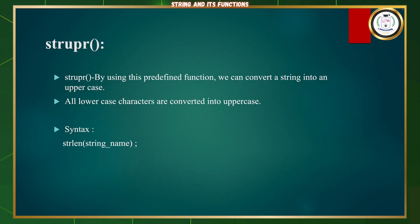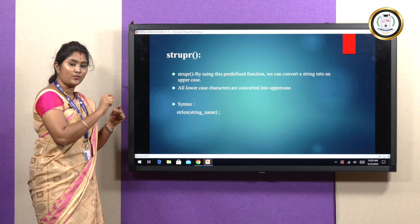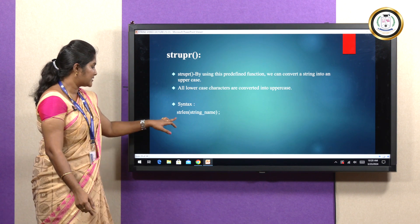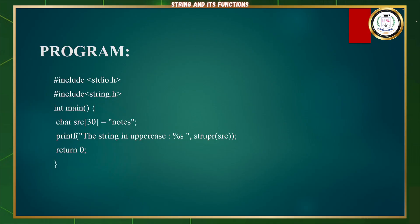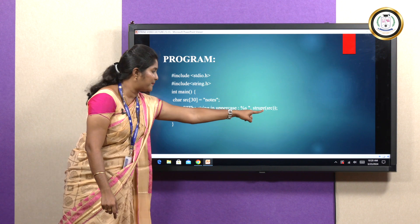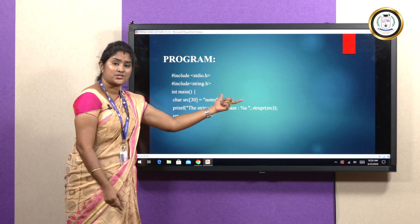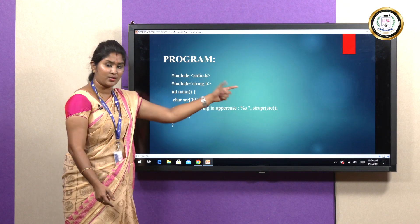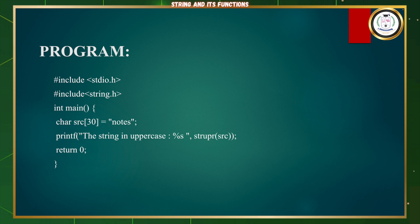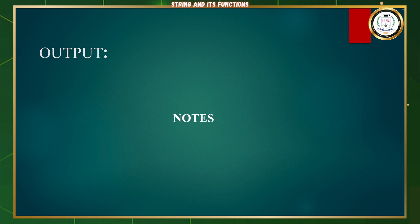strupr: this function is used to convert a given string into uppercase letters. If we provide a string in lowercase, it will convert it to uppercase. We declare the array with its size and string elements, then call strupr. The output converts the input string entirely to uppercase.